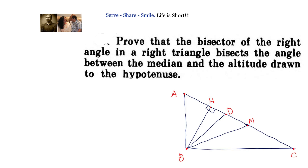We have a right triangle where angle ABC is equal to 90 degrees. Let us start by saying this angle is x. We know that the other angle will be 90 minus x, and because angle ABC equals 90 degrees, that makes this angle again back to x degrees.